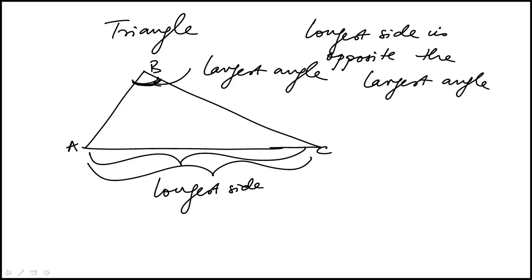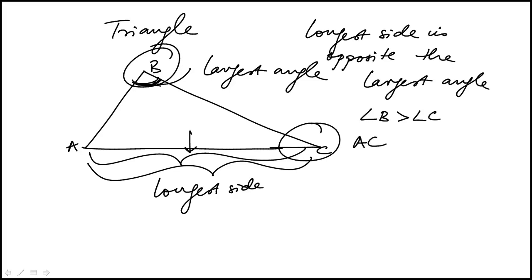So if angle B is greater than angle C, then side AC, which is opposite angle B, is going to be greater than side AB. That is a general property for any triangle.